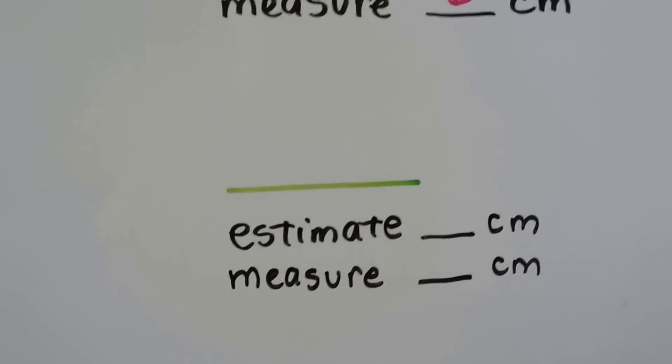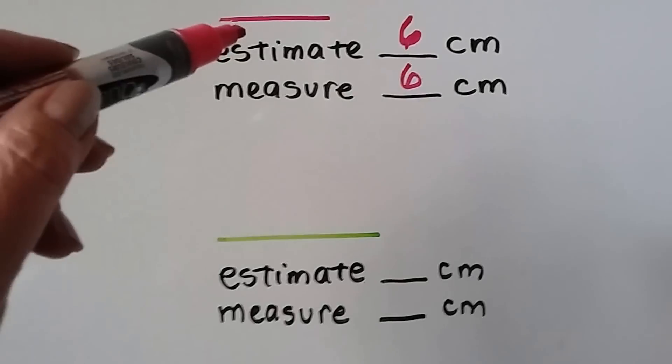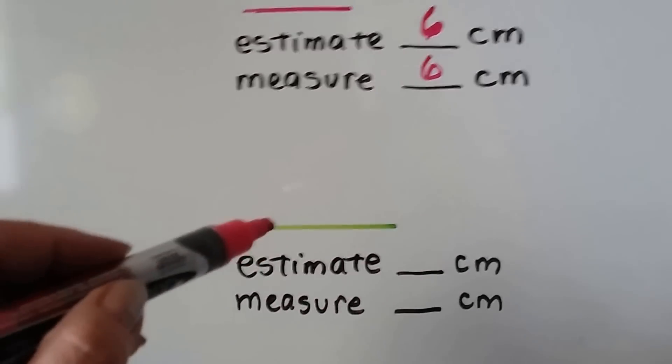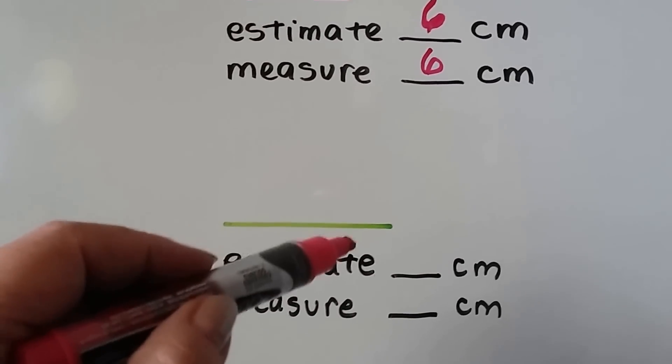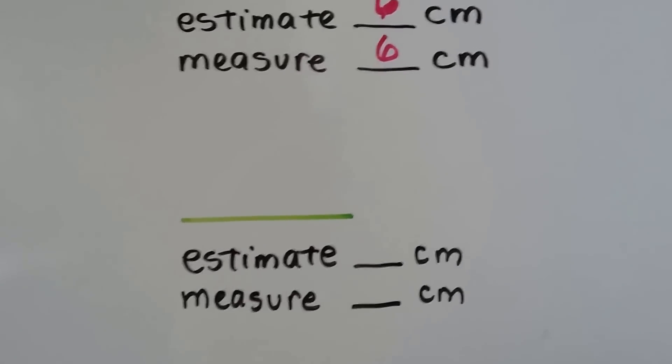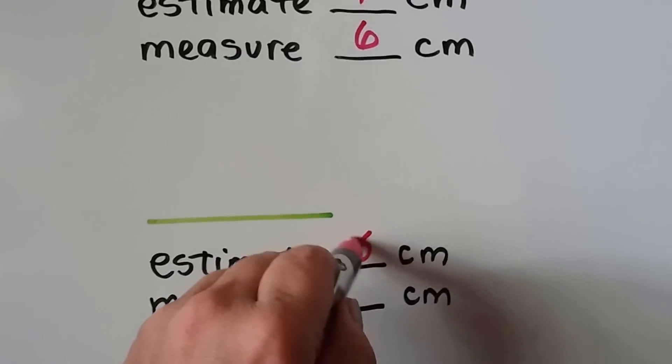Now, let's estimate this green line. Well, if that one's six, this one might be, I don't know, maybe eight? So let's estimate eight centimeters.